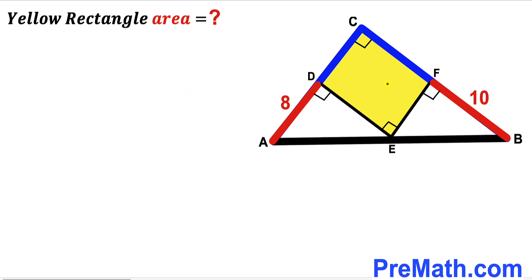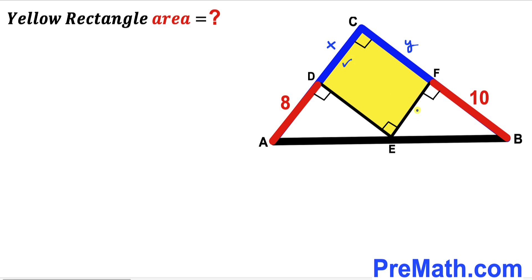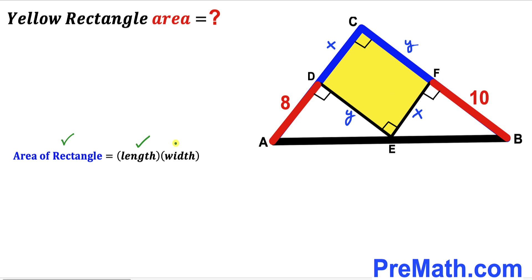Let's focus on the yellow rectangle and label one side as X and the other side as Y. If one side is X then side EF is also X. If one side is Y then side DE is also Y. Recalling the area of a rectangle formula — area equals length times width — the area of rectangle CDEF is X times Y.